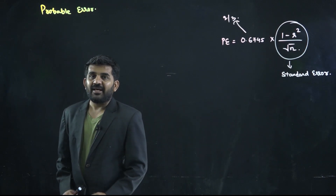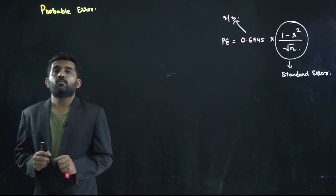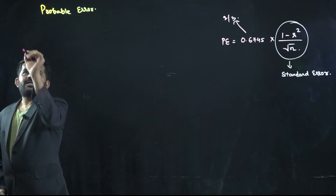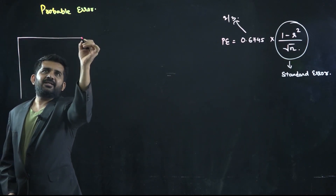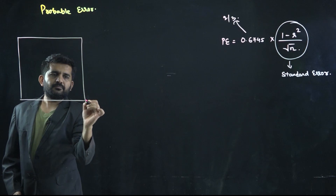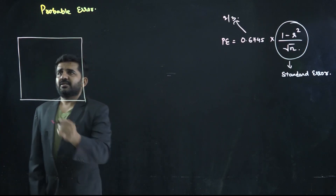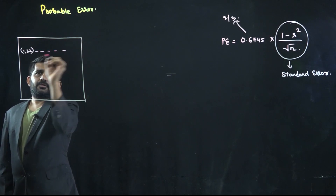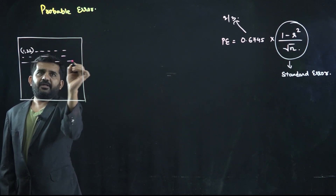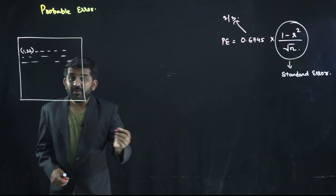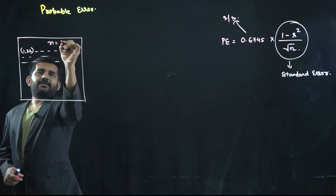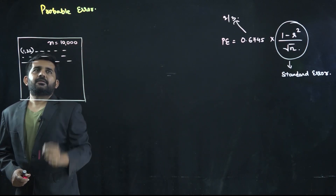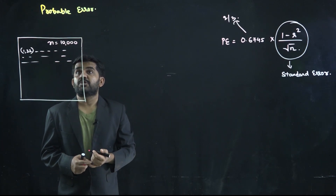Before learning probable error, you need to understand what a sample is. Say I am taking data of a bivariate variable — data 1, 2, up to n numbers. It is 10,000 data points.